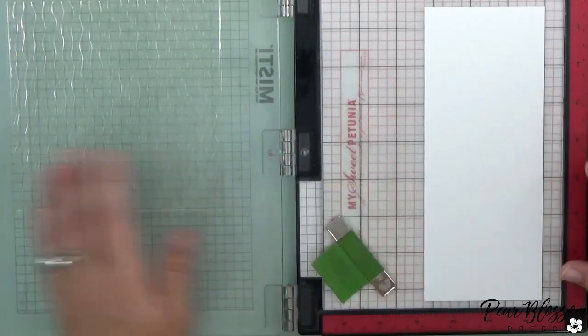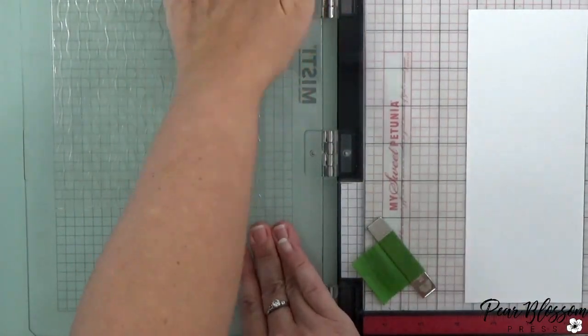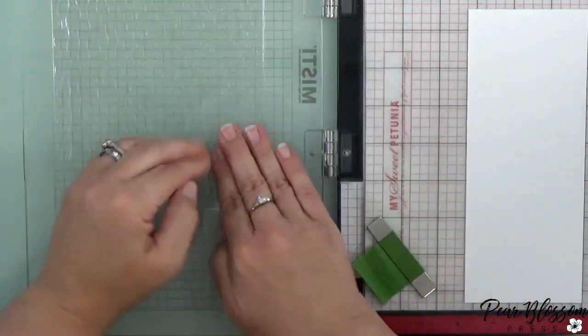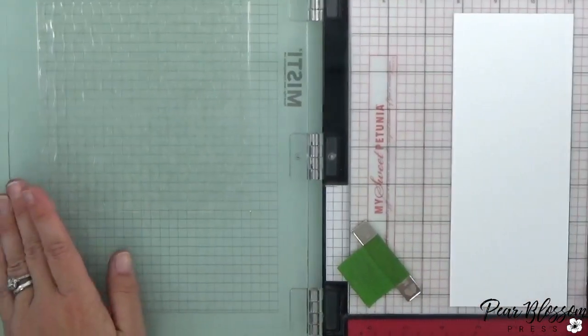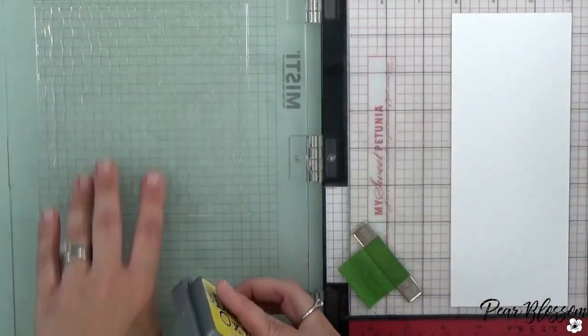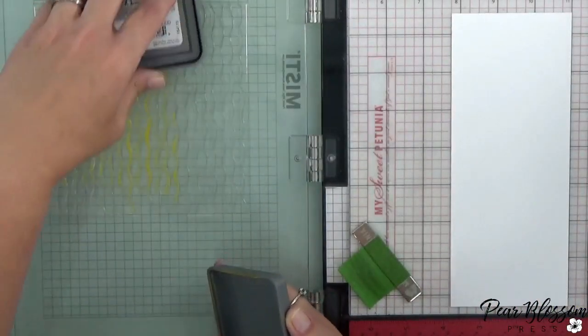So I'll go ahead and rotate the stamp, pick it up, and again we want to get any air bubbles out, or at least as much as possible. You can have a couple—it's not a big deal—but if you have big bubbles in there it's going to affect the way your image stamps.